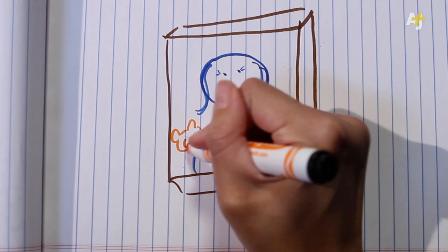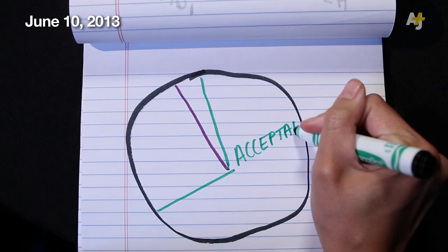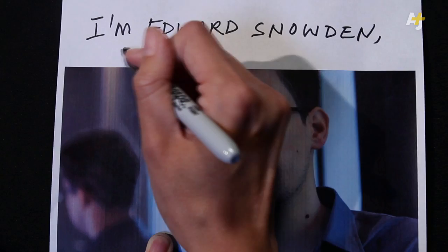Opinions since the leaks went public range from this to this. A majority of Americans surveyed in a Pew Research Center poll said the NSA getting secret court orders to track the calls of millions of Americans to investigate terrorism is acceptable.